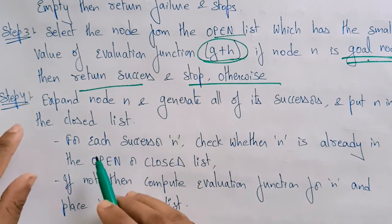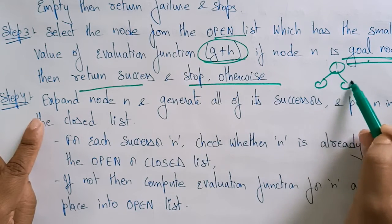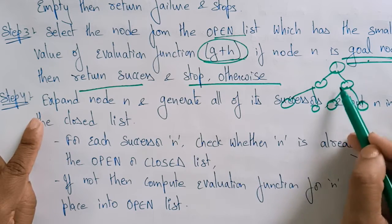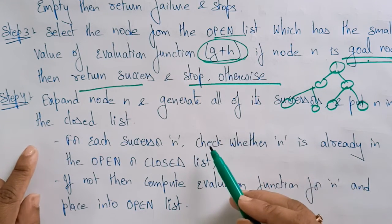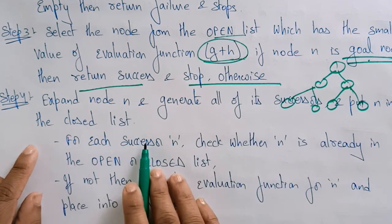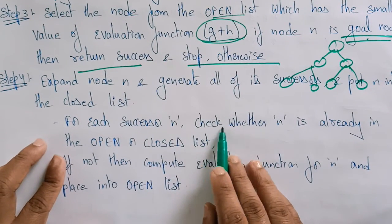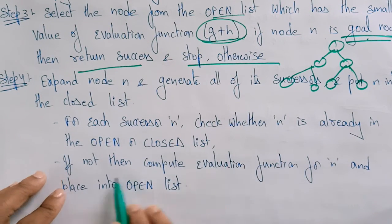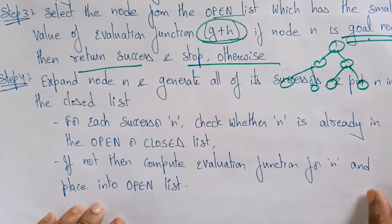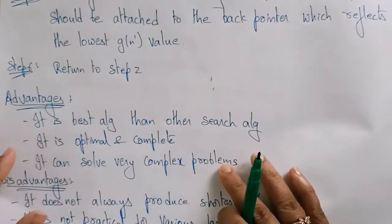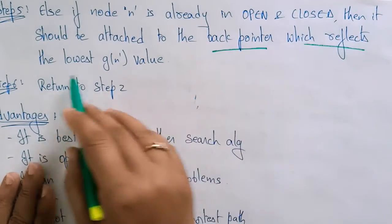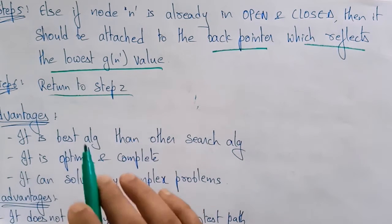Otherwise, expand that node — generate all of its successors and put n in the closed list. For each successor n dash, check whether it is already in the open list or the closed list. If not, compute the evaluation function for n dash and place it in the open list. If n dash is already in the open or closed list, attach it to the back pointer which reflects the lowest g(n) value. Repeat these steps.